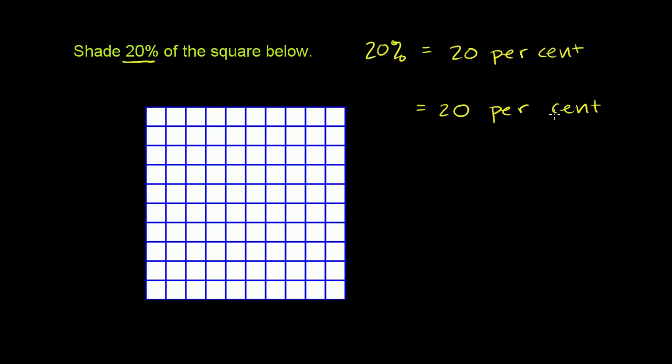And if you're familiar with the word century, you might already know that this cent comes from the Latin for the word hundred. So this literally means you can take cent, and that literally means 100. So this is the same thing as 20 per hundred.